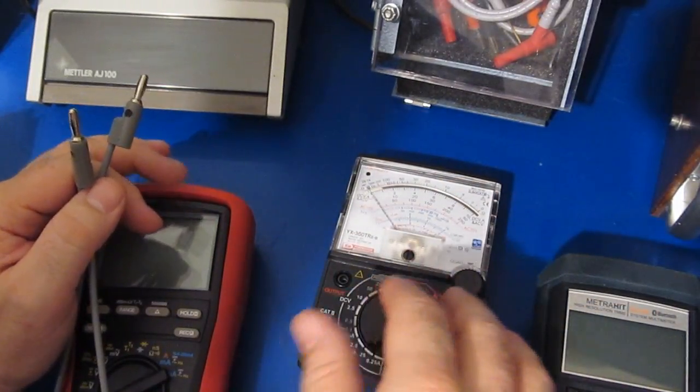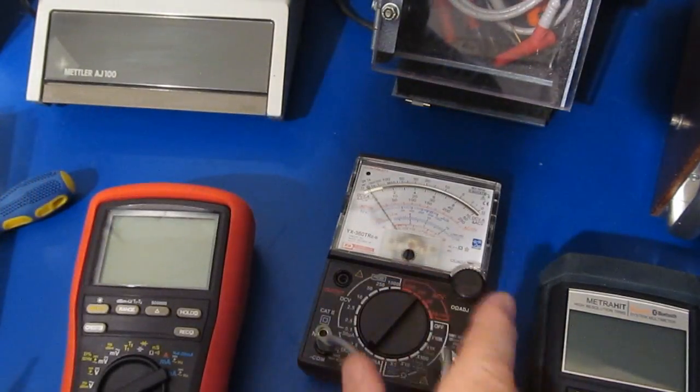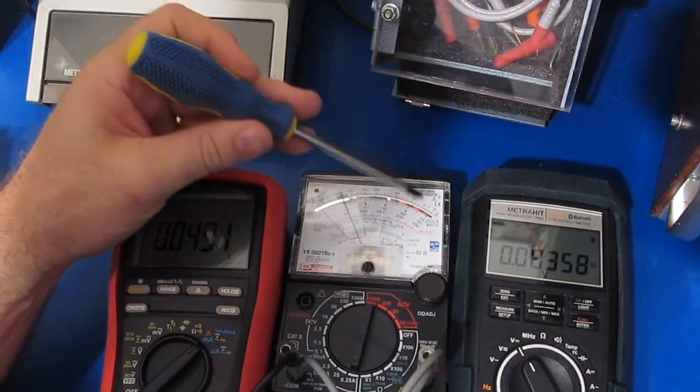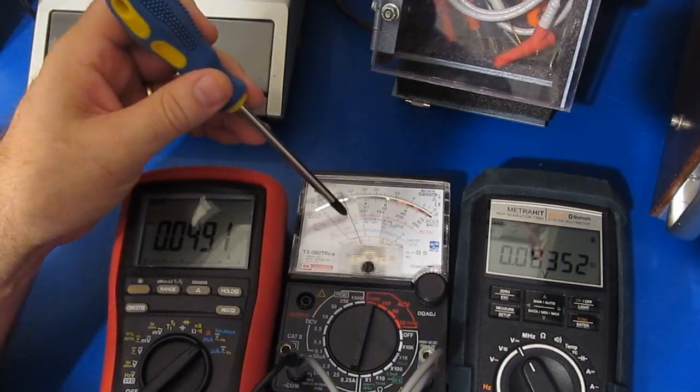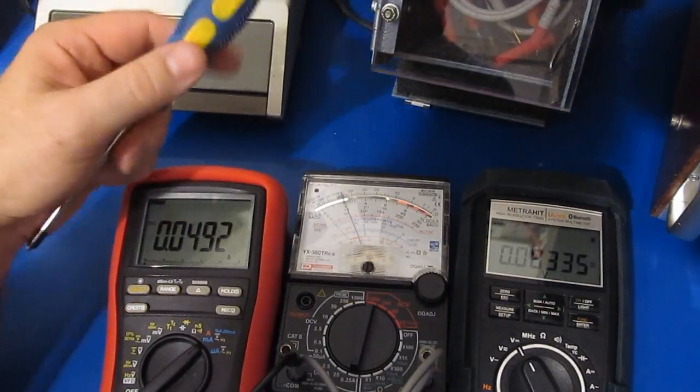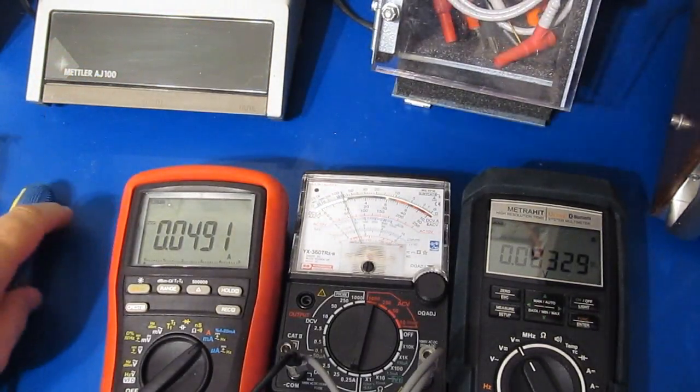But I've added a bunch of transient protection to this. This will actually survive my little mini surge test now. So again we're on the 250 milliamp scale. You can see the meter is reading roughly 50 milliamps right now, which corresponds with what the Brymen is showing as well.